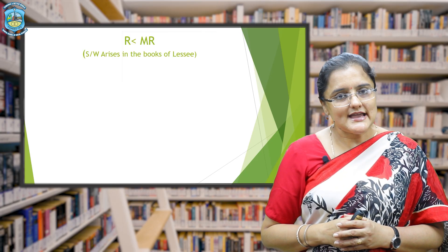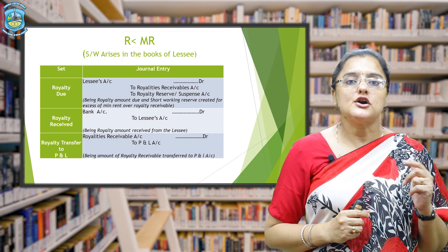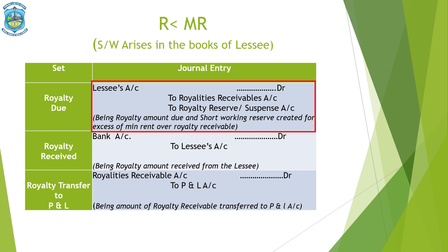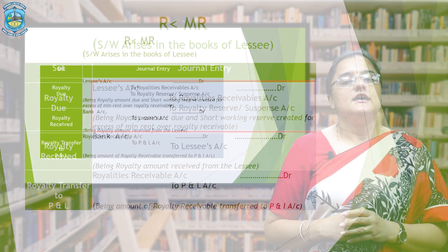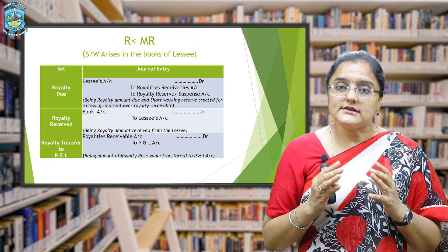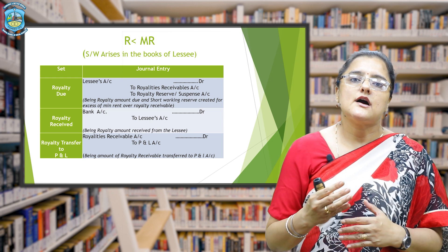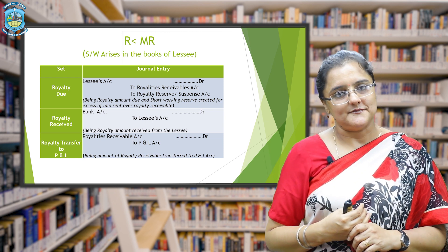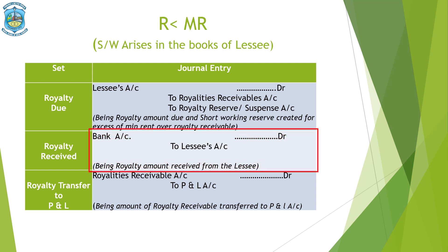In situation two in the landlord's books, when royalty is less than minimum rent, short working is recorded as royalty reserve or royalty suspense account. The royalty due entry becomes: lessee's account debit to royalties account and to royalty reserve account. The royalty reserve is a contingent liability, written off when short working recoupment is paid to the lessee. The entry for royalty received remains bank account debit to lessee's account.